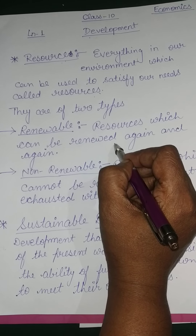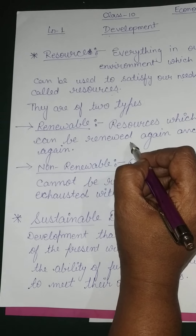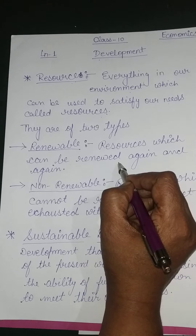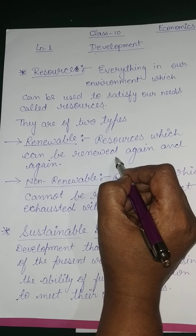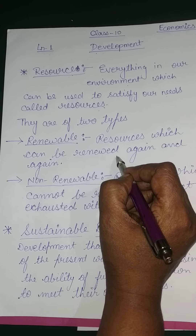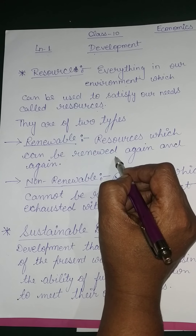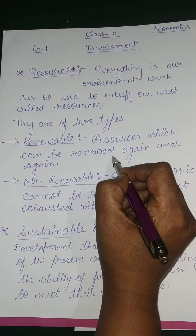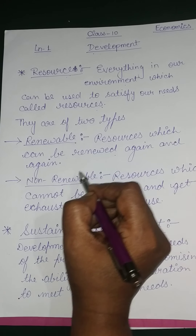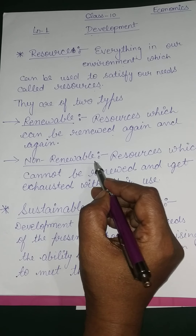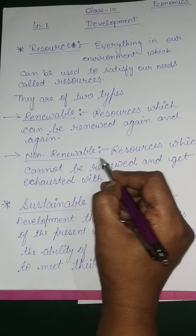Solar energy can be utilized again and again by many ways. It will never exhaust, and it will provide us many beneficial opportunities to develop our condition in society and to develop the condition of our country. So solar energy is called a renewable resource.